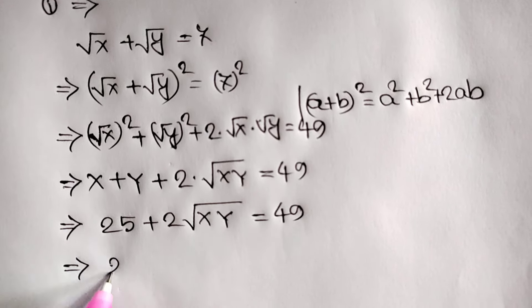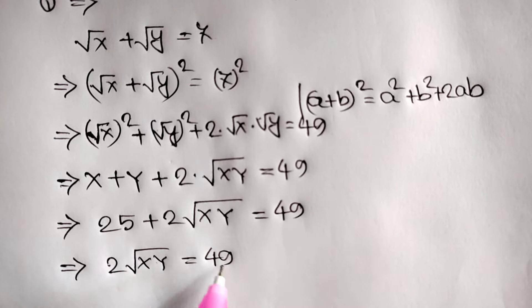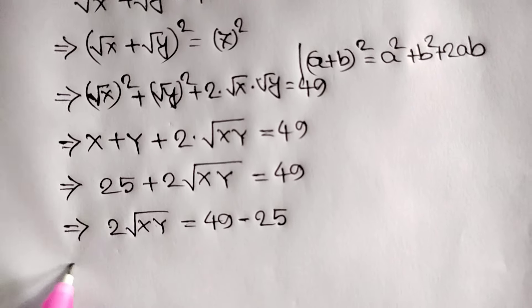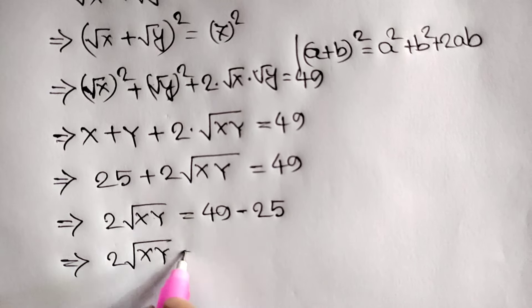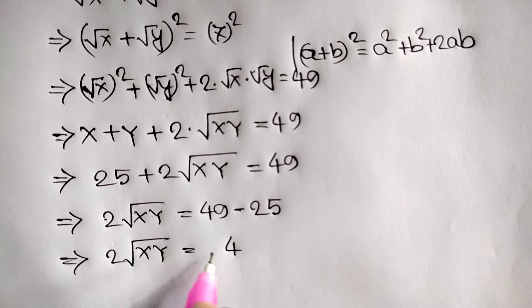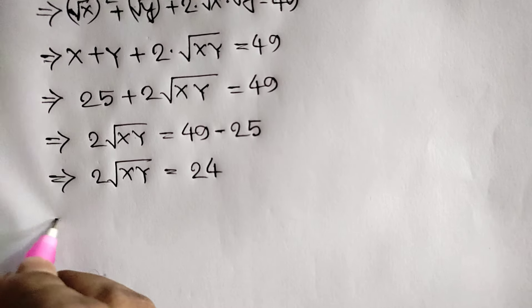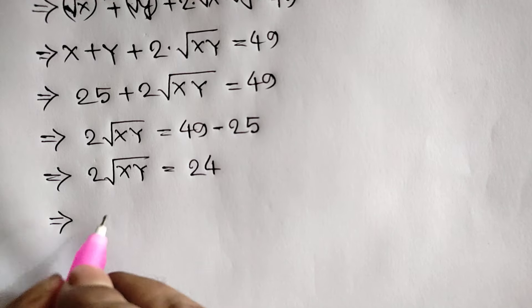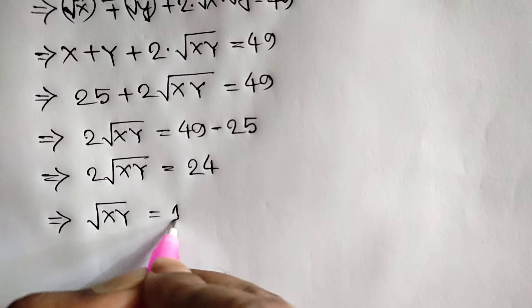Taking 25 to the right side, we get 2·√(xy) = 49 − 25 = 24. Dividing both sides by 2, we get √(xy) = 12.